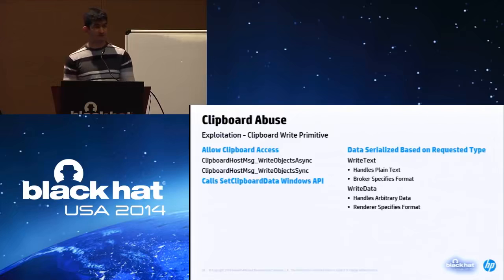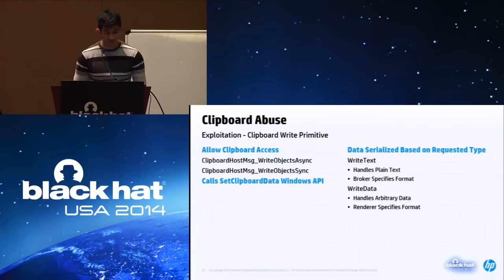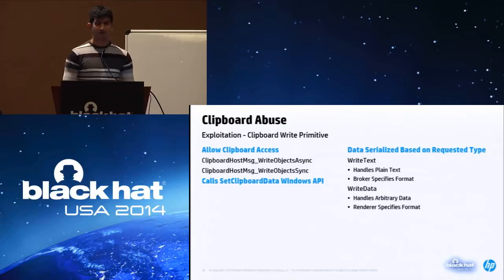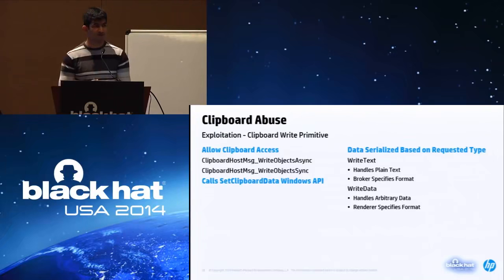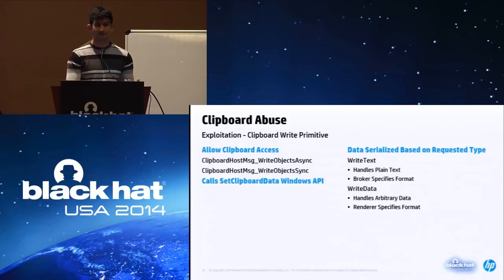To understand why this happens, you first need to know that all renderer processes for Chrome run as untrusted and in their own Windows station, meaning they have their own clipboard and their own atom table. This means that if someone wants to copy data from a renderer process, the renderer has to send it to the broker and have the broker copy it to the clipboard. To that end, the broker offers two cross calls: ClipboardHostMessage_WriteObjectsAsync and ClipboardHostMessage_WriteObjectsSync. On Windows, these end up calling the SetClipboardData API, which takes two parameters: the clipboard type and the actual data, which gets handled differently based on the clipboard type. Data is serialized to the clipboard by Chrome depending on the type the renderer requested — so if the renderer requested text, that will bubble up and call the write text function.